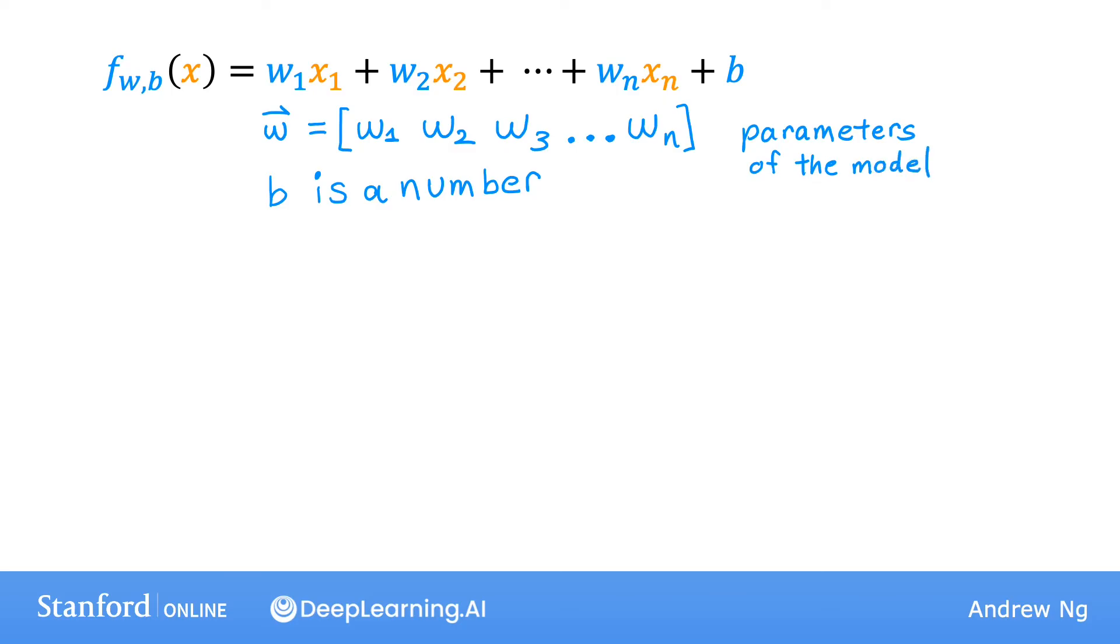Let me also write x as a list or a vector, again a row vector, that lists all of the features x1, x2, x3 up through xn. This is again a vector, so I'm going to add a little arrow up on top to signify. So in the notation up on top, we can also add little arrows here and here to signify that w and that x are actually these lists of numbers. They're actually these vectors.